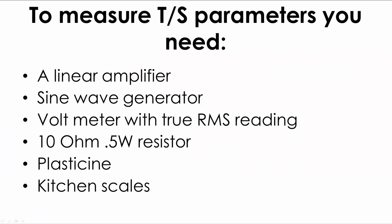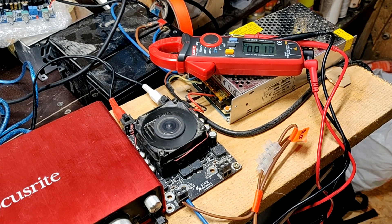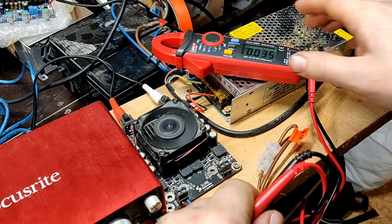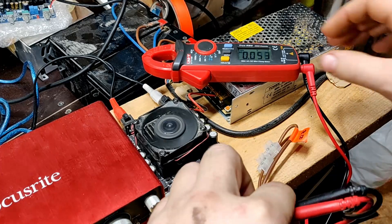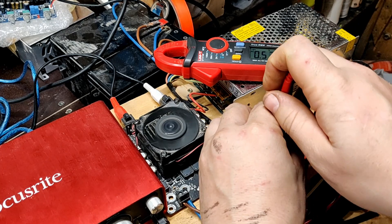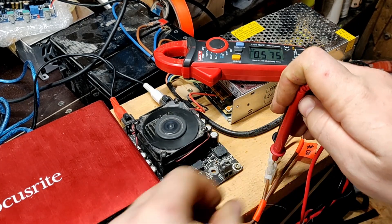All you need is an amplifier without any internal filtering, a frequency generator, a voltmeter, a 10 ohm 1.5 watt resistor, some plasticine, and an ordinary food scale. You do not need to buy any fancy Daytona Audio DATS systems or anything. With some care and effort you can get really precise measurements by yourself with simple equipment.